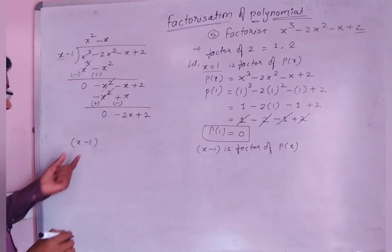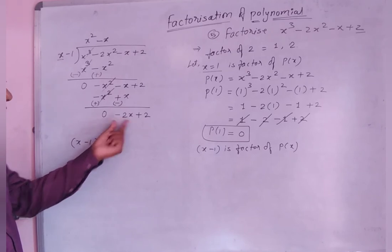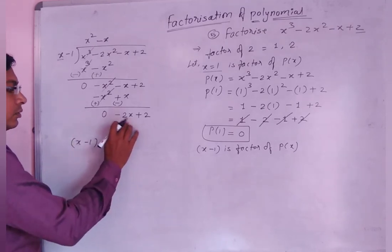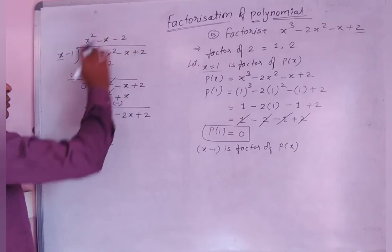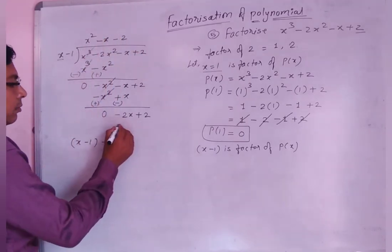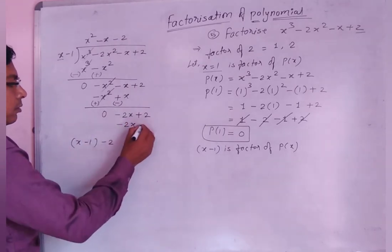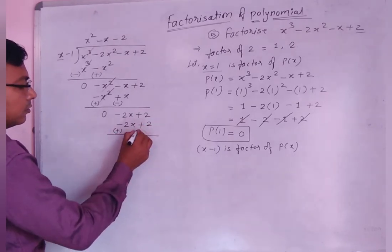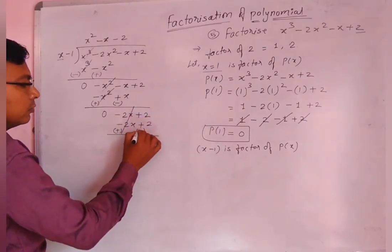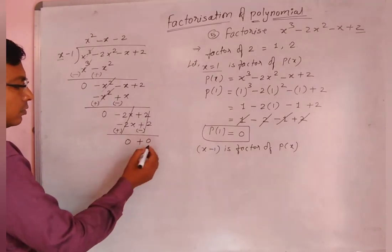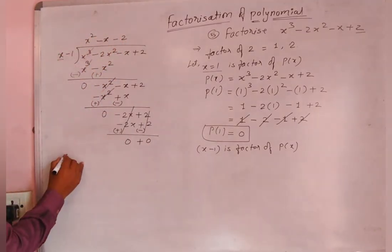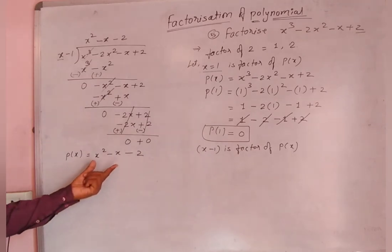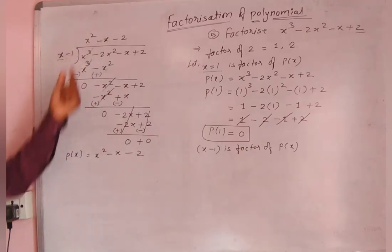Divide minus 2x by x to get minus 2. Multiplying x minus 1 by minus 2 gives minus 2x plus 2. After subtraction, minus 2x and plus 2 get cancelled, remainder is 0. So by long division, we get the quotient polynomial p of x equal to x squared minus x minus 2.